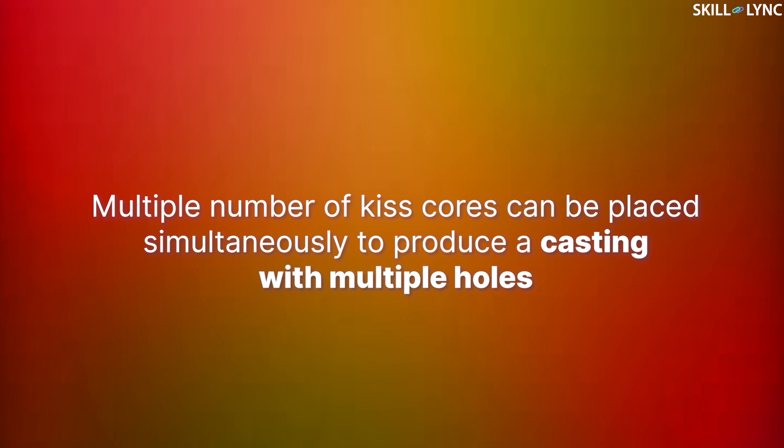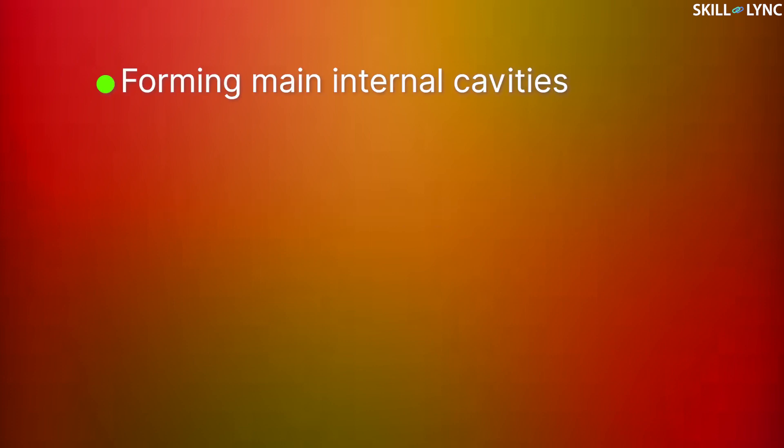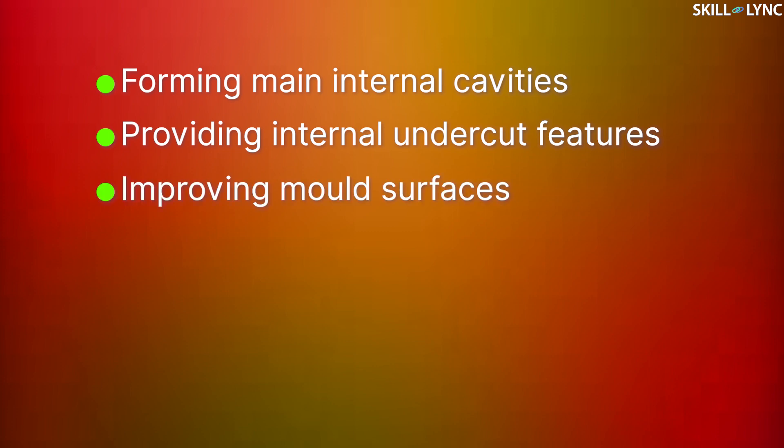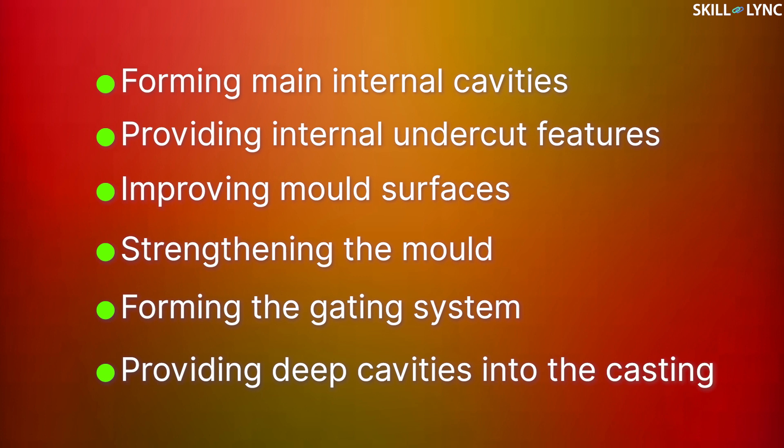Well, that's all for the types of cores. Now let's talk about the applications of cores. For hollow castings, cores help in forming the main internal cavities and provide internal undercut features. More applications of cores include improving the mold surfaces, strengthening the mold, and forming the gating system for large molds. Cores also help in achieving deep cavities in the casting.